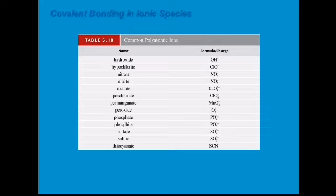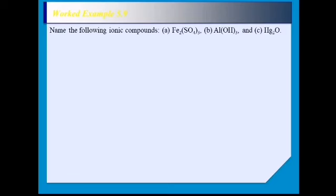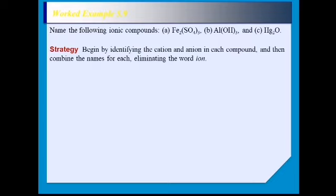Now let's have a worked example — an activity where you are going to name the following ionic compounds using the different rules. A tip: begin by identifying the cations and anions in each compound, and then combine the names for each by eliminating the word 'ion'.